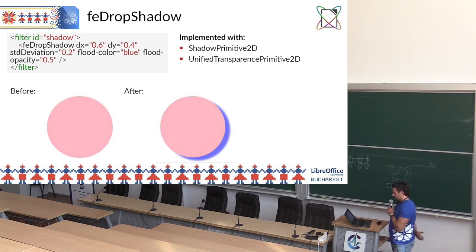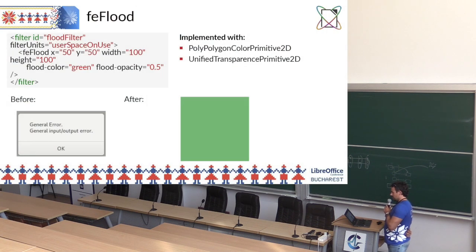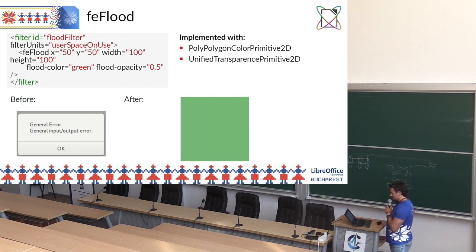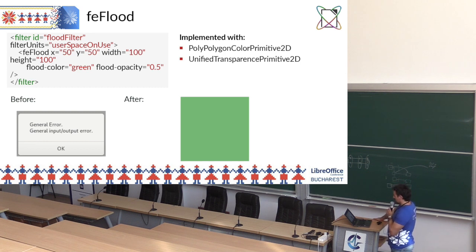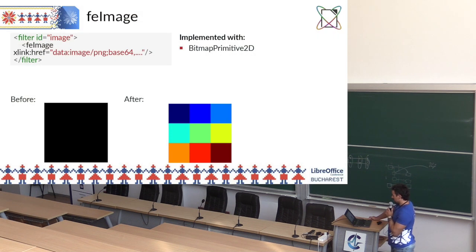Another one was the flood filter. Before it was implemented, for this particular example, LibreOffice just gave an error that it could not be imported. Because when LibreOffice doesn't have anything to display from an SVG file, it basically gives a general error and you cannot open anything. On the right we can see how it looks now — it's just a polygon filled with color. I also used unified transparent to implement this one.